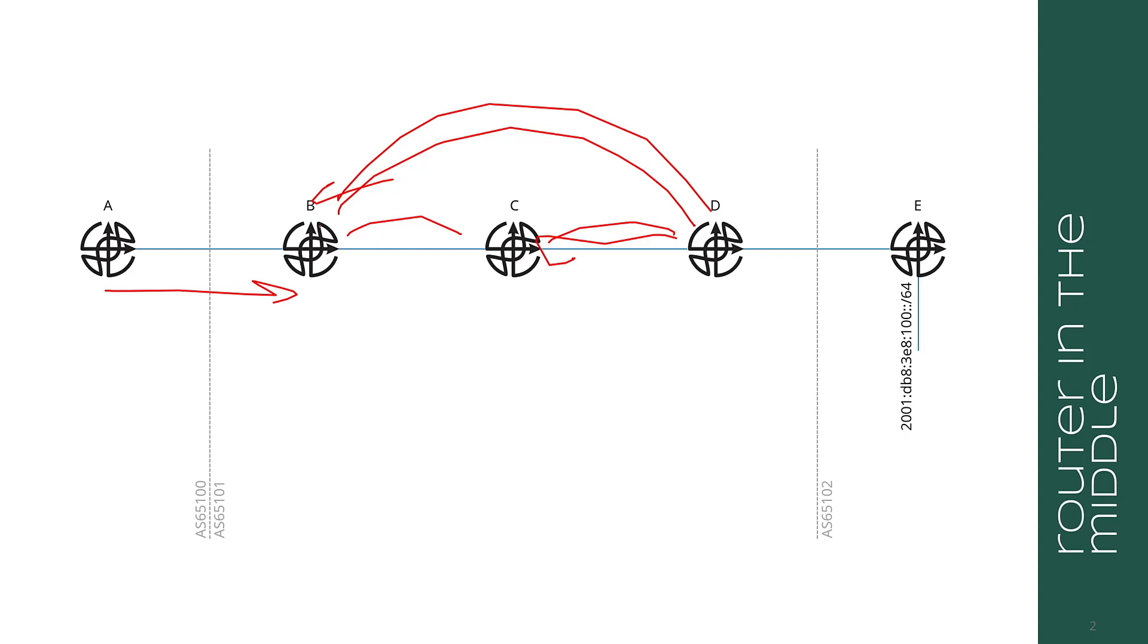The reasoning here is that D will advertise the route both to B and to C. So when the traffic comes from A, it'll hit B. B will have the route with the next hop over here of E.